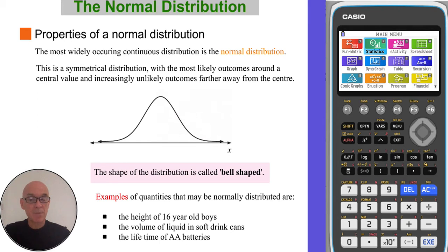The shape of the normal distribution curve is called bell-shaped, and three examples of variables that may be normally distributed are given below.